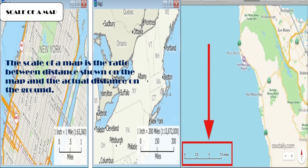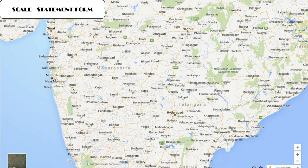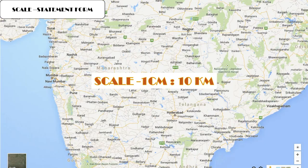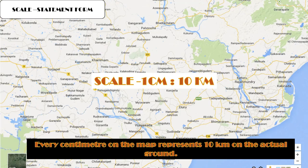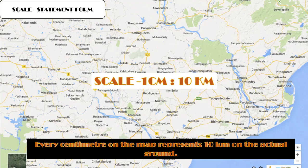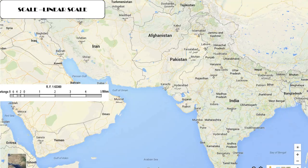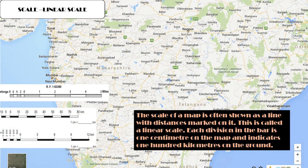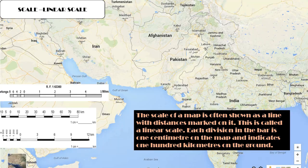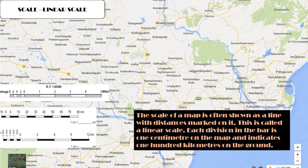The scale of a map is the ratio between the distance shown on the map and the actual distance on the ground. Some maps express the scale in a statement form — for example, '1 centimeter for every 10 kilometers' means every centimeter on the map represents 10 kilometers on the ground. Other maps show the scale as a line with distances marked on it, called a linear scale or graphical scale, where each division in the bar is 1 centimeter on the map and indicates 100 kilometers on the ground.